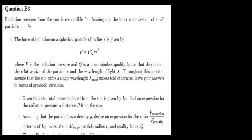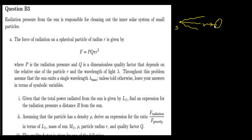The particle nature of light means when photons hit the surface, they transfer momentum to that particular surface. We are assuming that the photons, when they hit the surface, will not rebound and will be completely absorbed. The sun emits radiation and when these radiations hit particles in the solar system, they transfer momentum to these particles, and the particles experience a corresponding pressure.